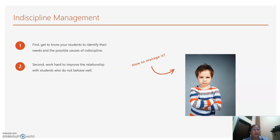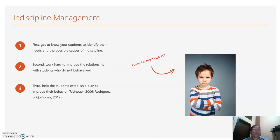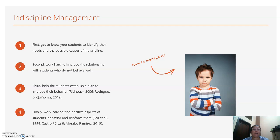Experts suggest we should work hard to improve the relationship between misbehaving students and ourselves — creating bonding through the student-teacher relationship. We also have to help our students establish a plan to improve their behavior. Finally, we have to work hard to find the positive aspects of our students' behavior and reinforce them. Every student has positive aspects, so we should try to find and reinforce those qualities in students who are causing indiscipline, as this will help improve their behavior in class.